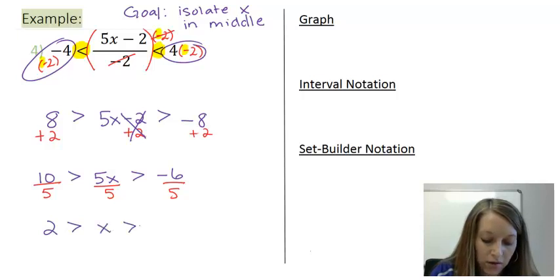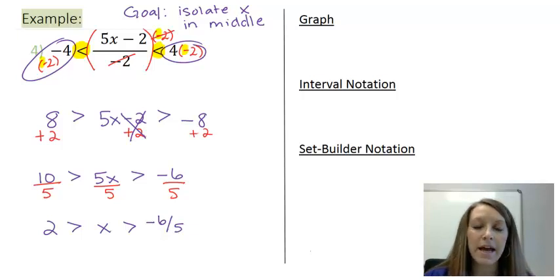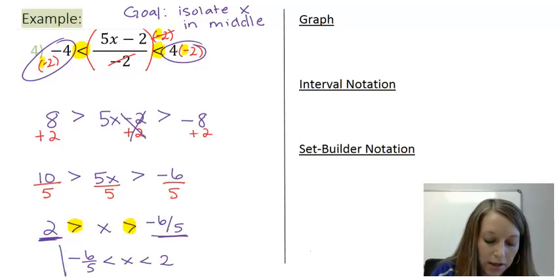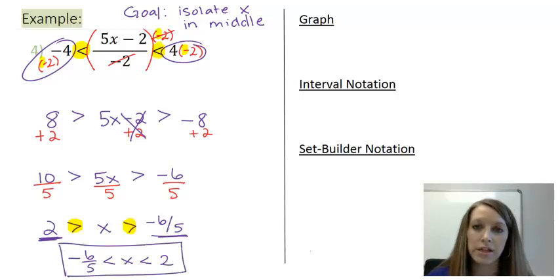To get rid of the five I divide again all pieces by five and that leaves me with positive two is greater than x is greater than negative six fifths. Now I do have my x isolated in the middle but this is not in the correct format. We want to have our smallest numbers on the left and our largest numbers on the right and just like I said before these guys should always be less than. They should always be pointing to the left. So I need to rearrange this whole statement here. It goes back to thinking like I'm holding it up next to a mirror. So I have negative six fifths is less than x is less than two. So here is my final solution to this problem.